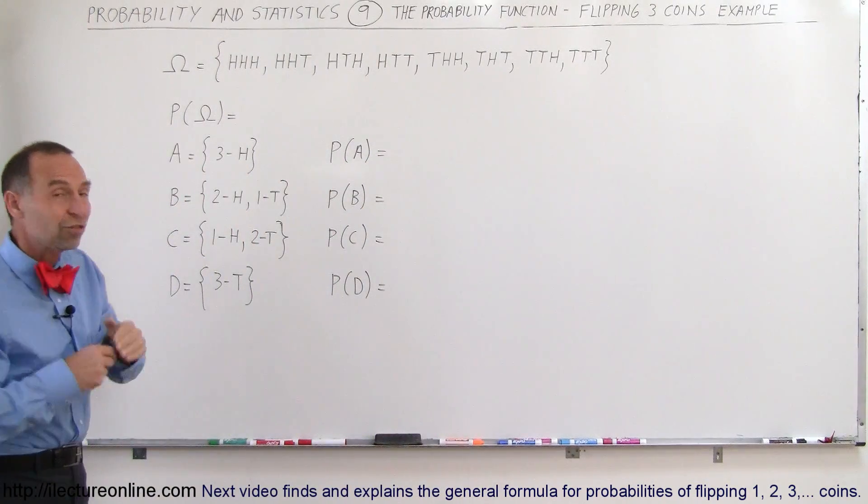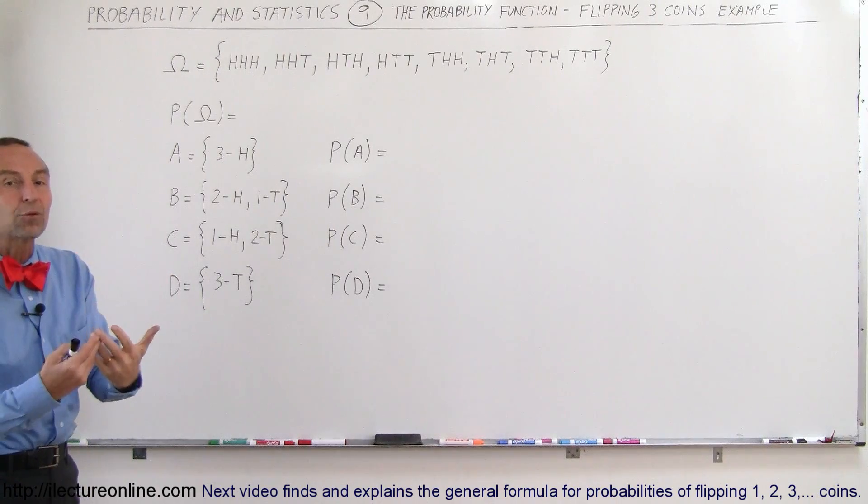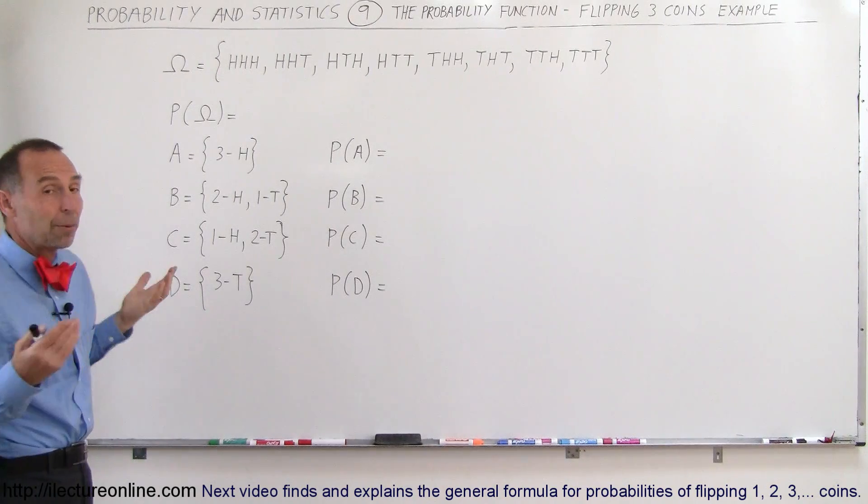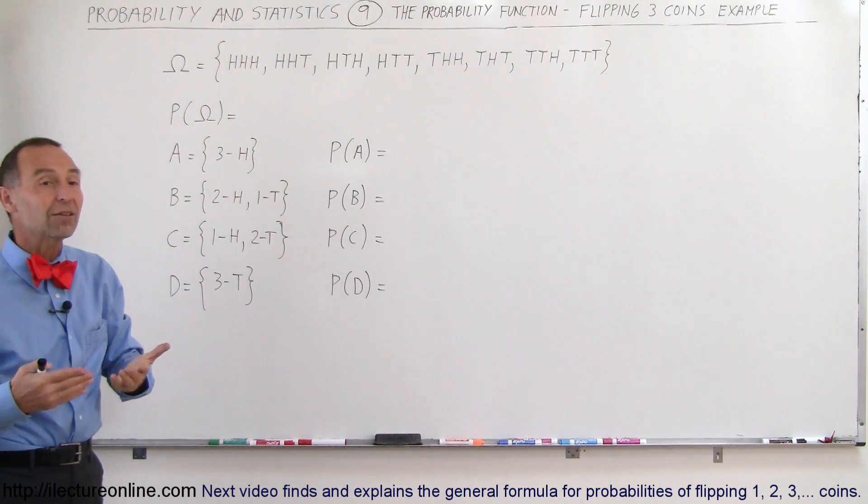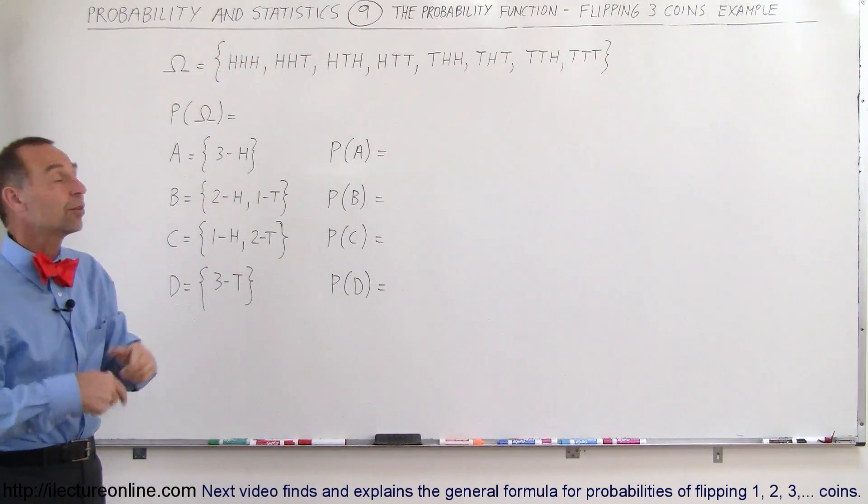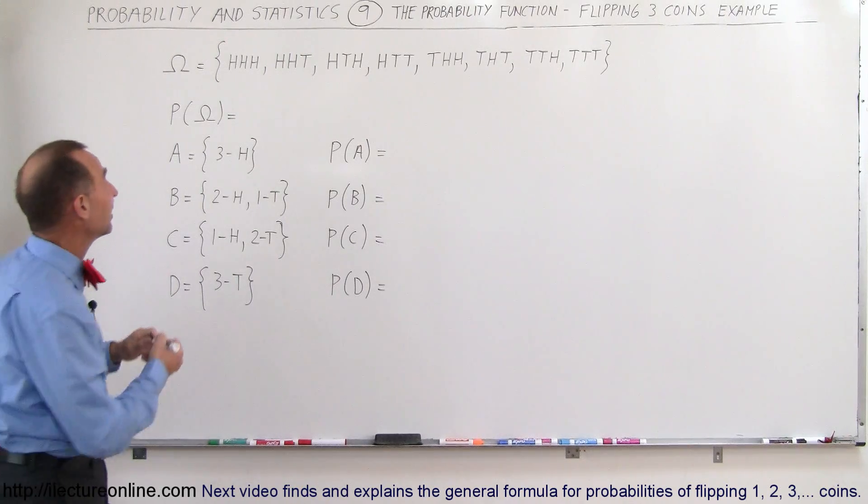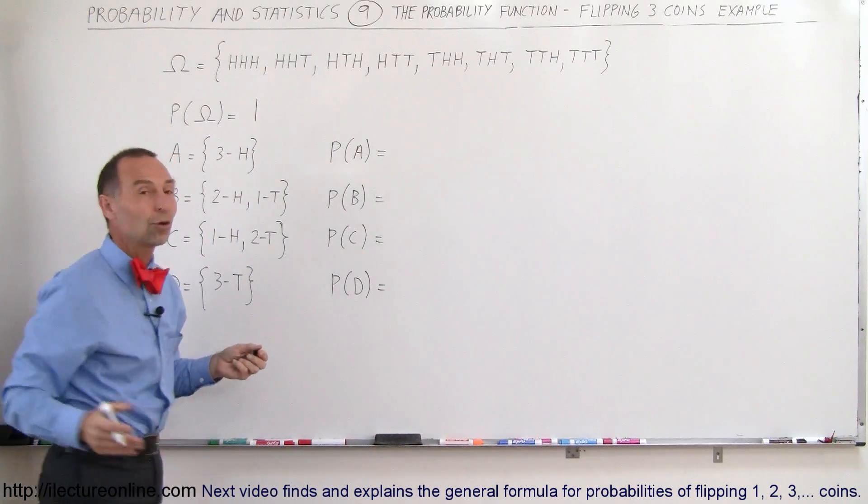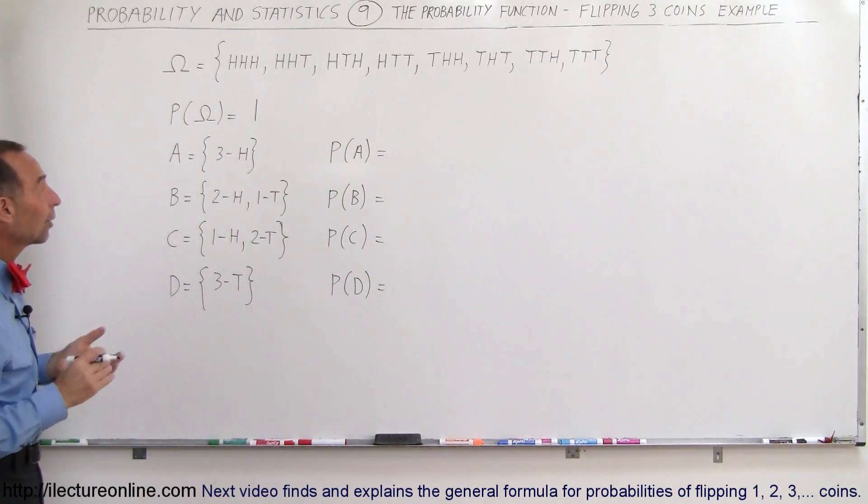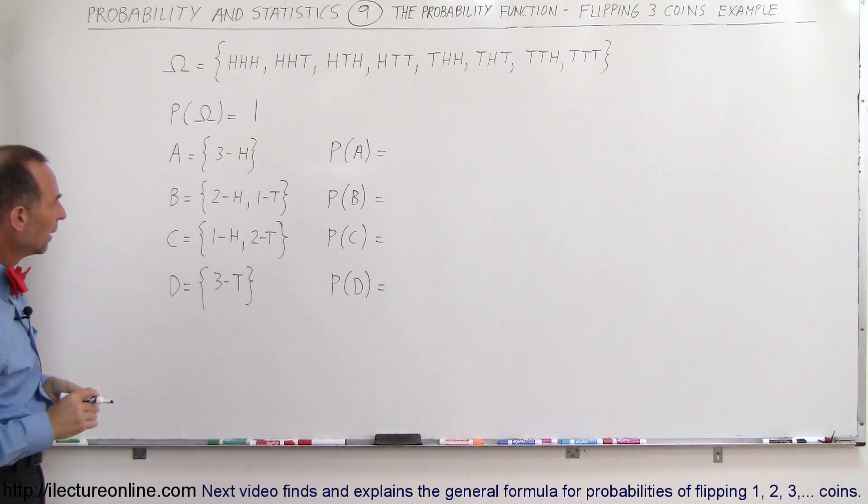Now, what is the probability that any of those outcomes will come out? Of course, the probability is equal to one because this is the total sample space. These are the only possibilities, and so the probability of all those possibilities occurring is equal to one. The probability of the sample space, by definition of probability, is always one.